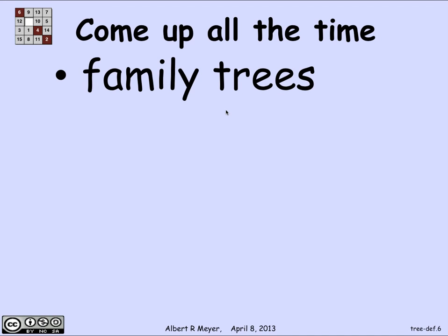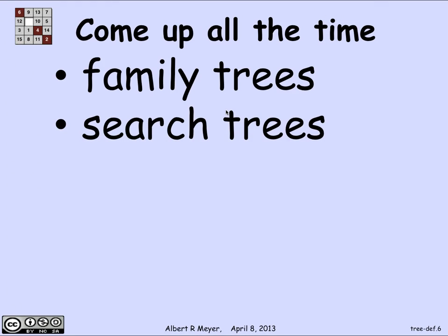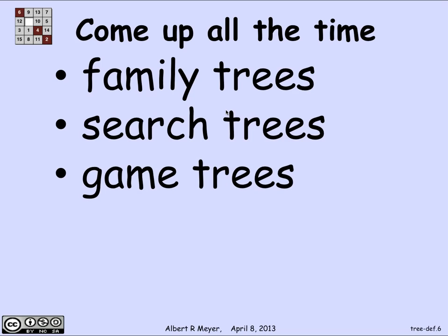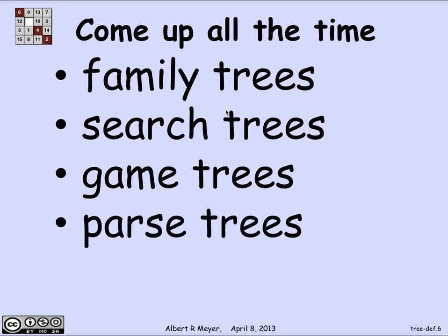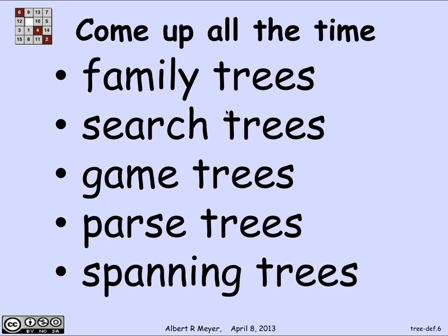Trees really come up all the time. There are family trees, where you draw the descendants of a given person, branching out in a tree structure. There are search trees, which come up constantly in computer science, where you branch on the answer to some question to determine which way to search next. There are game trees, which define games and strategies. There are parse trees in compiler technology and language theory. And there are spanning trees, which we'll be discussing today.